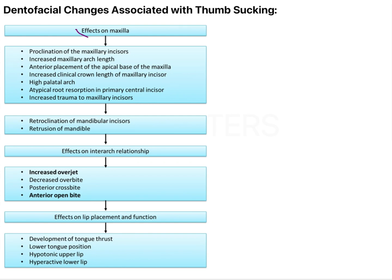Effects on the maxilla include proclination of the incisors, increased maxillary arch length, anterior placement, increased clinical crown length, high palatal arch, and narrow maxillary arch. Effects on the mandible include retroclination of mandibular incisors and retrusion of the mandible. Interarch relationships affected include increased overjet, reduced overbite due to anterior open bite, and posterior crossbite.